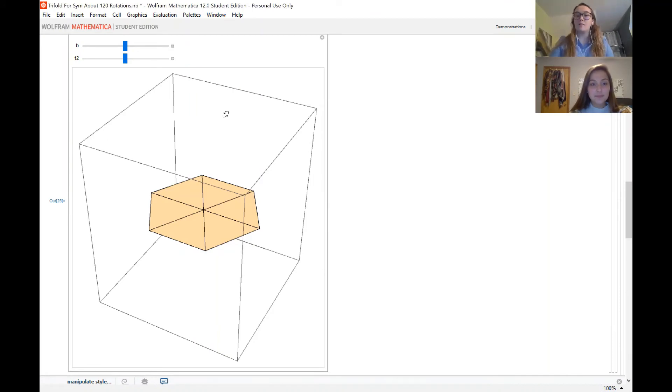Now I would like to show you the Mathematica Manipulate for the generalized trifold. As you can see here, there's a slider for b which changes the sector angle on the crease pattern. And then t2 is a folding angle which will actually fold the paper. Since there's no tears occurring when we fold the paper, this means that our equation for our folding is valid.